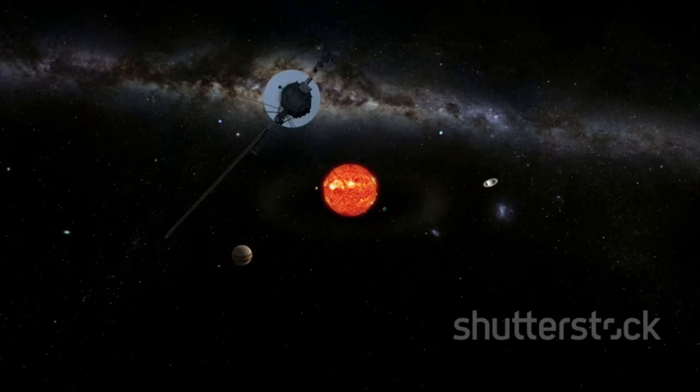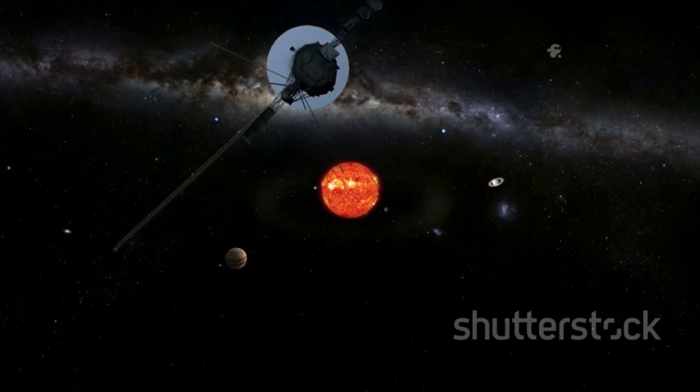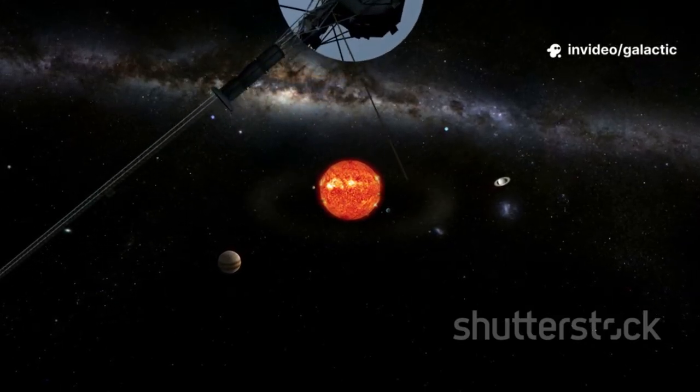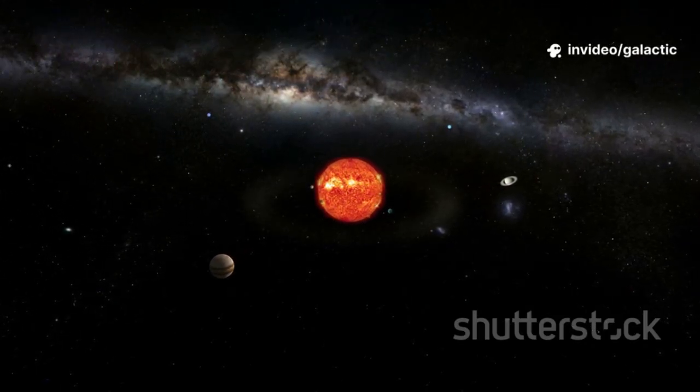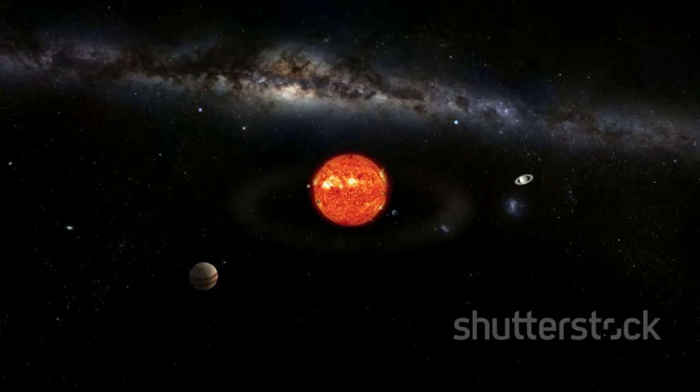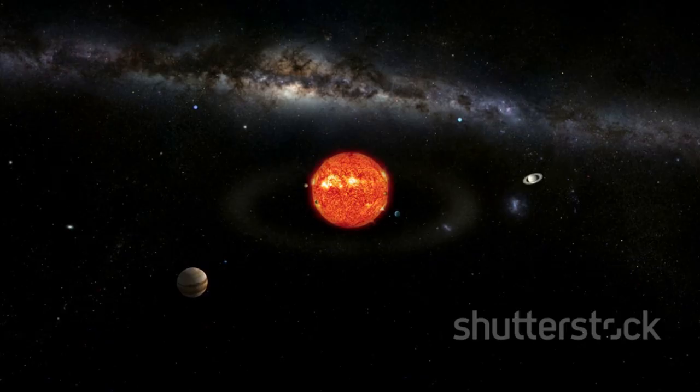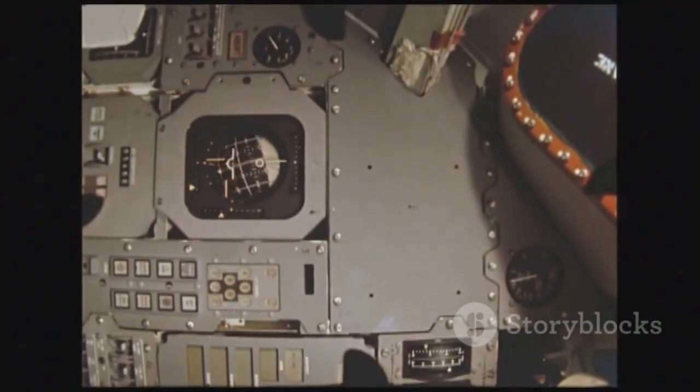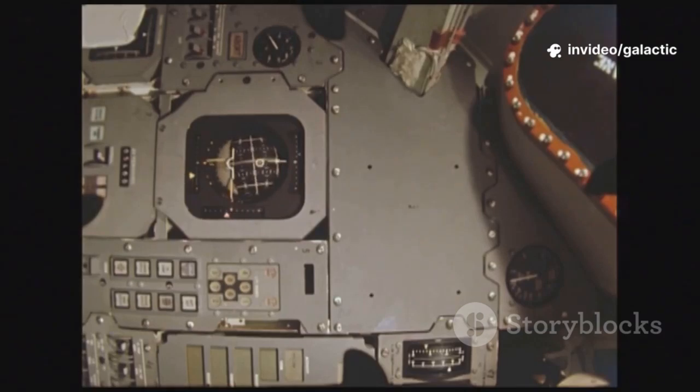Voyager 2 is now crossing a boundary that is invisible yet monumental, leaving the sun's protective bubble, the heliosphere, and entering interstellar space. This is a frontier no human has ever crossed, a threshold into the vast unknown. Its sensors, built by people long since retired, continue to measure and witness this new frontier.